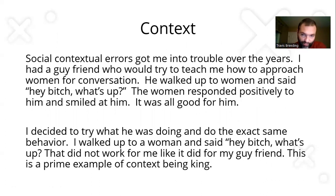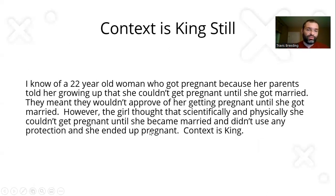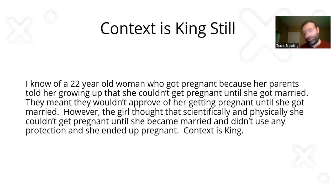Social contextual errors got me into trouble over the years. I had a guy friend who would try to teach me how to approach women for conversation. He walked up to a woman and said, 'Hey, bitch, what's up?' The woman responded positively and smiled at him. I decided to try the exact same behavior — I walked up to a woman and said the same thing. That did not work for me like it did for my friend. This is the prime example of context being king. I also know of a 22-year-old woman who got pregnant because her parents told her she couldn't get pregnant until she got married, meaning she took that literally and thought scientifically she could not get pregnant before marriage. When she got pregnant it was unexpected — she thought her parents lied to her, and it was a big mess. That shows how context is king and how important it is to address this from a young age. We're not talking about teaching five- or ten-year-olds about sex — we're talking about teaching social context so they can interpret and generalize things appropriately when they're older.